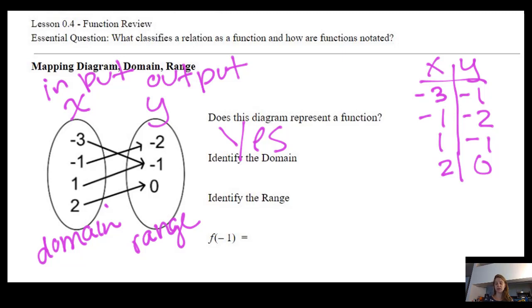Identify the domain. So the domain of the function, again, is possible X values, and I'm going to list it because there are four possible X values for this function: negative three, negative one, one, two. And I'm using set notation to say that's the set of numbers that represent the domain.